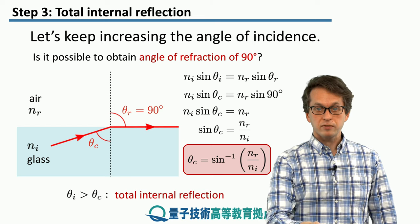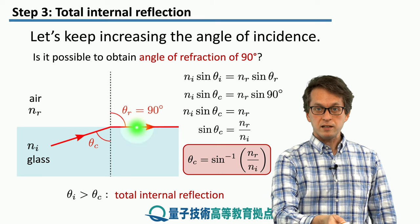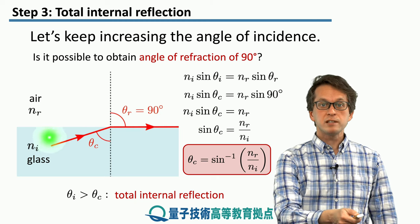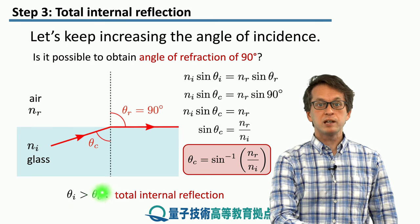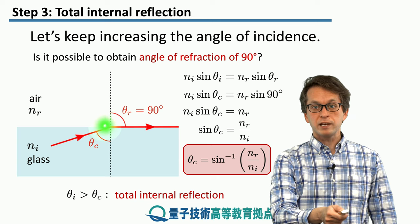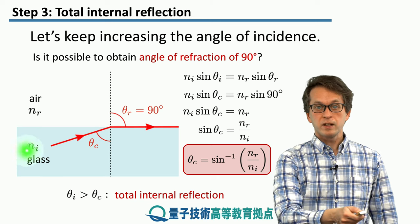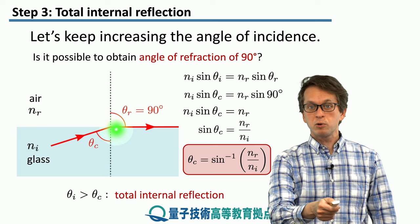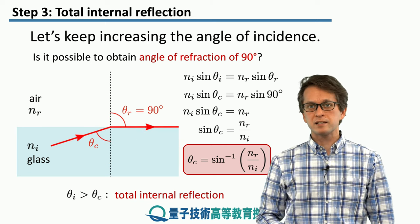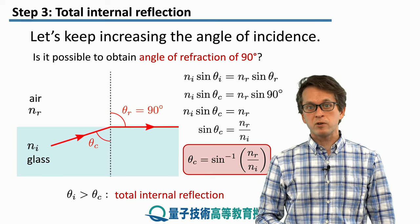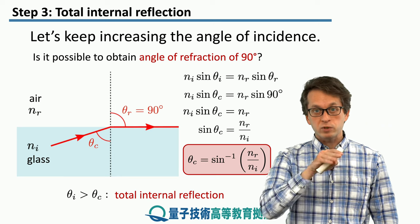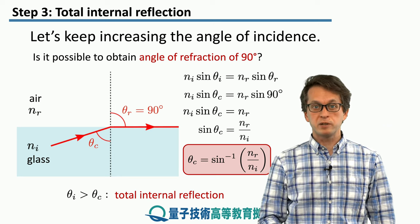When this happens, then the light ray travels parallel to the surface. But we can also keep increasing the angle of incidence to theta i being larger than the critical angle theta c. And in that case, what happens, we get total internal reflection. So the light ray comes in and gets totally reflected back inside the glass. And this is the case that we saw in the first step of Tyndall's experiment, where the light was being internally reflected and guided by the stream of water.